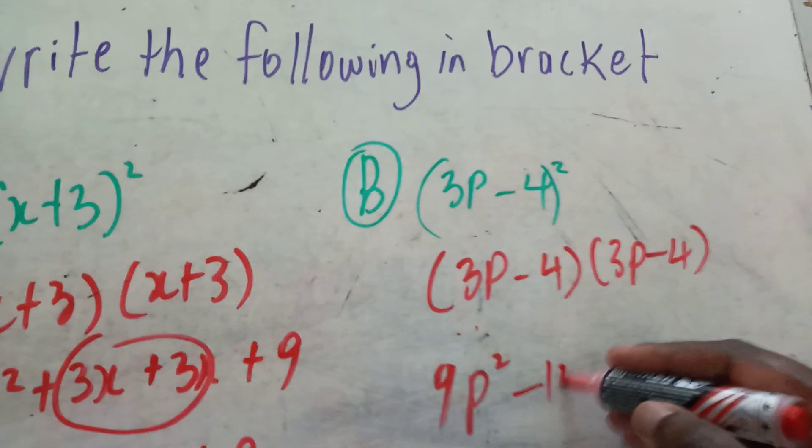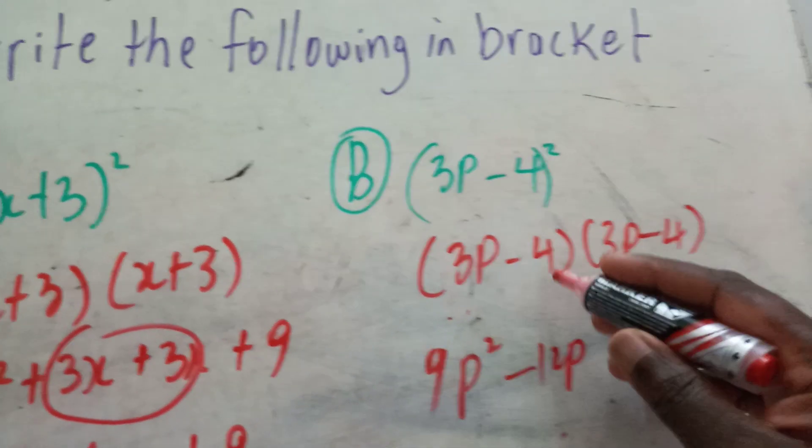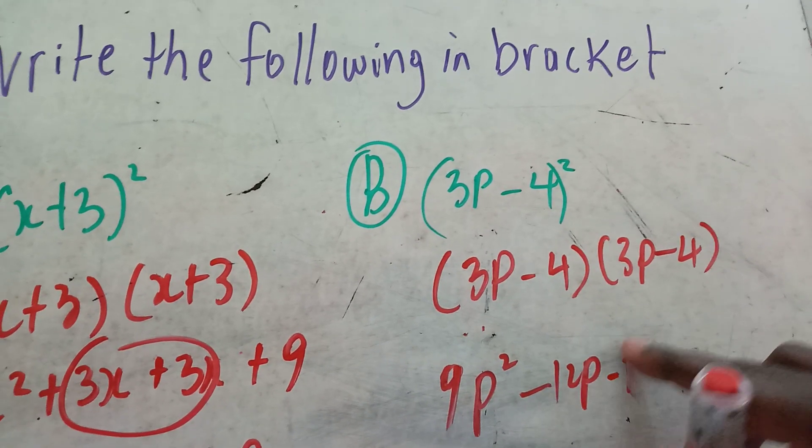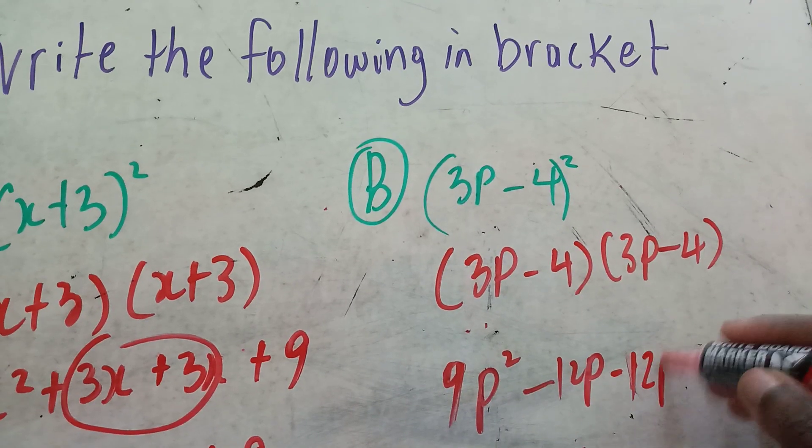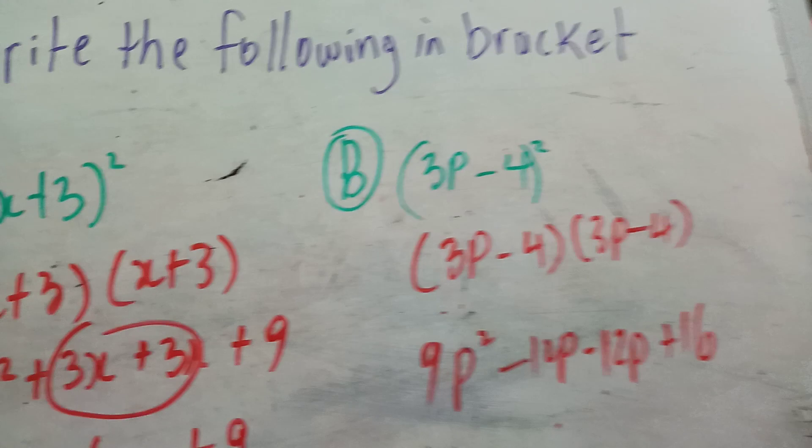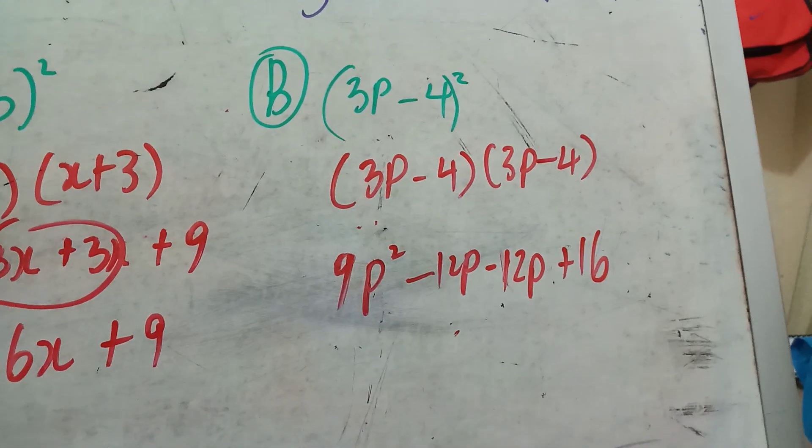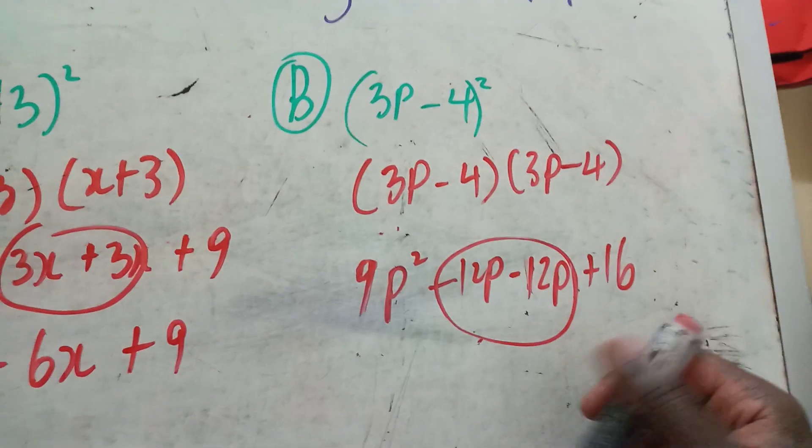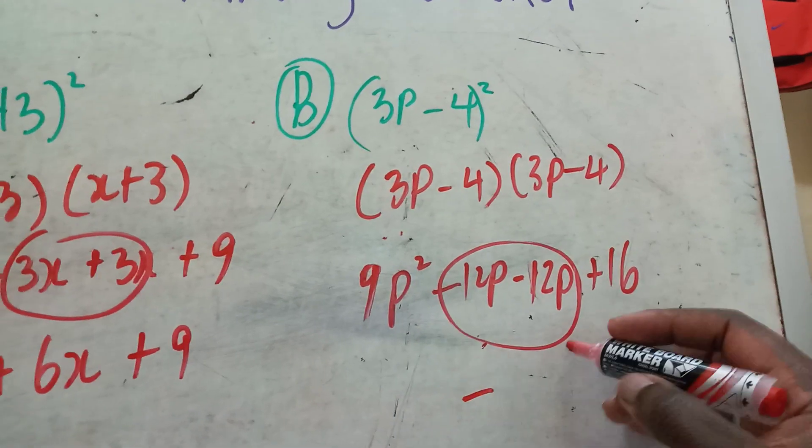Now we have -4 times 3p, which equals -12p. And -4 times -4 equals positive 16. Add the like terms together - these are like terms. It will be negative 24p.